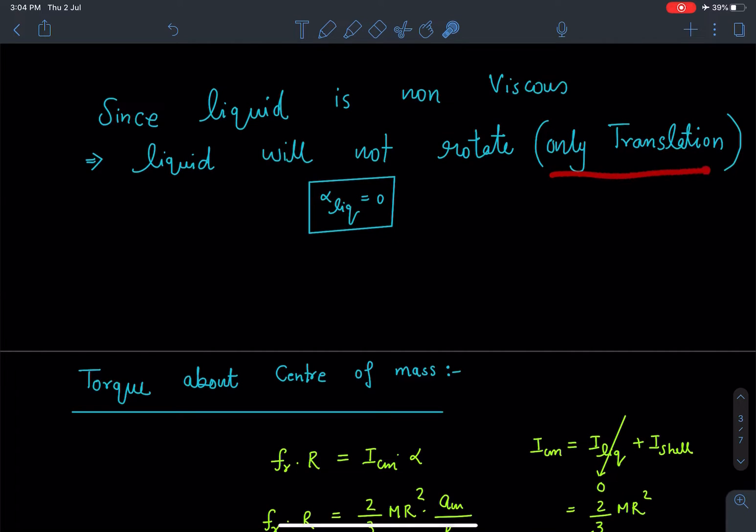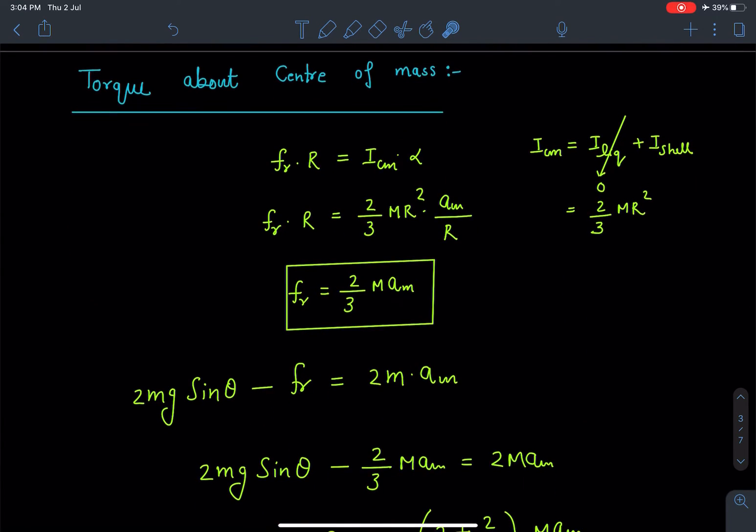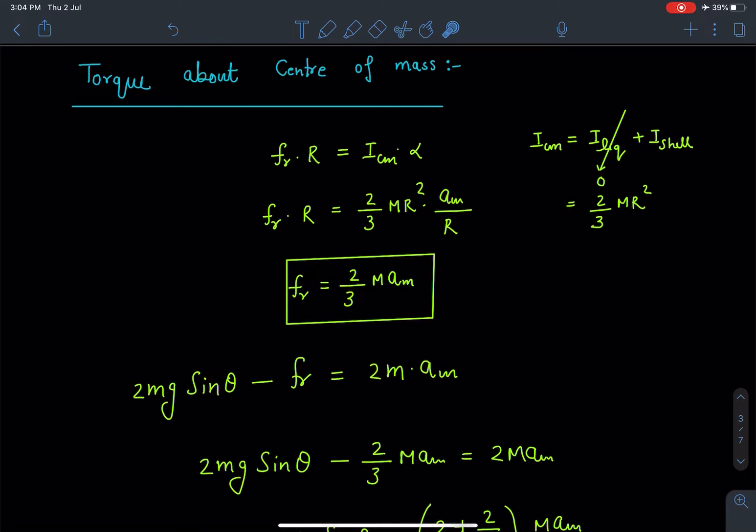Now second part is we will take a torque about center of mass which is going to give us F_R into R because torque due to mg and torque due to normal reaction will become 0 as they are passing through the center of mass itself.